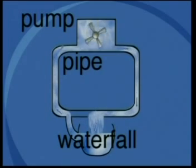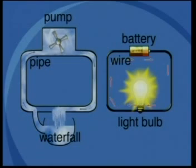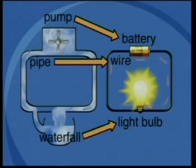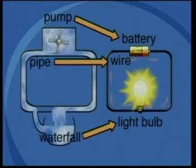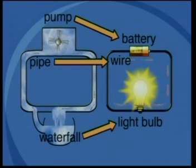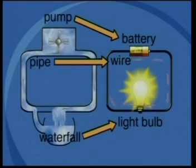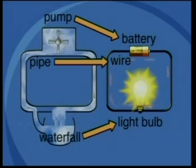This mechanical system consists of a pump pushing water through a closed loop. The electrical current is comparable to the water flowing through the system. The pipe is the equivalent of the wire in the electric circuit, the pump is the mechanical equivalent of the battery, and the waterfall is equivalent to the light bulb. The work done by the pump pushing water through the pipes is like the energy generated by the battery to drive the charge through the circuit. The water flows down the waterfall, transferring its gravitational energy, in the same way as the electric current passes through the light bulb, transferring electrical energy.